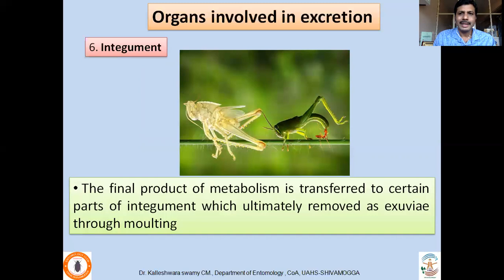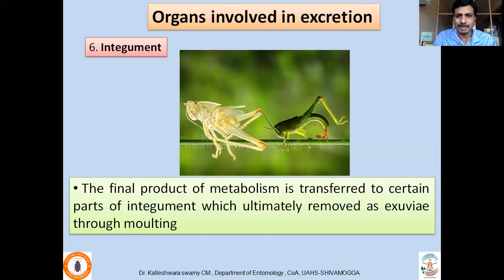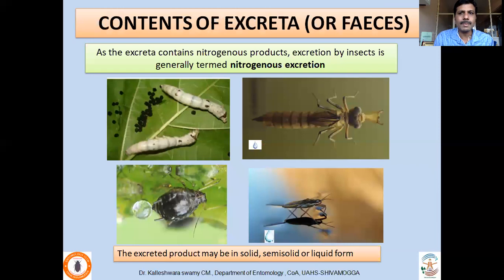The integument is also involved in excretion. Since insects moult frequently, some metabolic wastes are transferred and placed on the integument. Once the insect moults and the exuvia is shed, that waste substance is eliminated out of the body. Except for the Malpighian tubules, all other organs are involved in excretion to a very limited extent, making the Malpighian tubules the chief excretory organs.